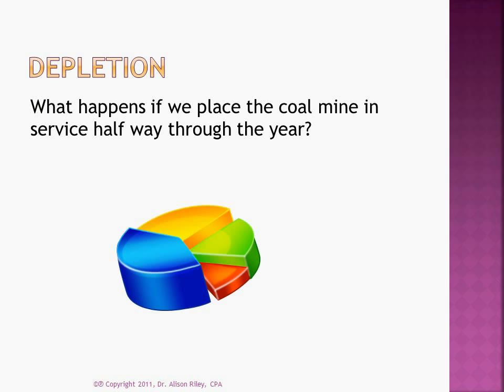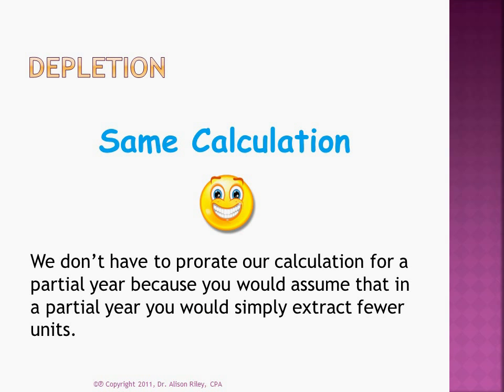What happens if we place the coal mine in service halfway through the year? This would not change our calculation of depletion expense at all. We don't have to prorate our calculation for a partial year, because in a partial year we would simply extract fewer units. We multiplied the amount extracted by the cost per unit, so if the mining started halfway through the year, the amount extracted would have been half as much, and we would automatically calculate the correct amount.